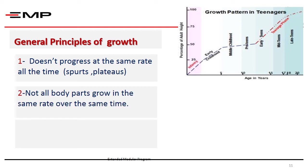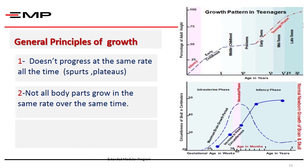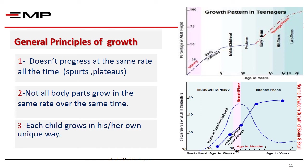The second point is that not all body parts grow at the same rate at the same time. If you look at this figure, you will find that the maximum growth of the skull ever occurs in the first year of life. Then skull growth is very minimal later on to reach adult size by the age of five to ten years. Third, parents usually compare their children to others. You have to assure them that every child grows in his or her unique way — even twins — and that there is always a range of accepted normal, not only one figure.